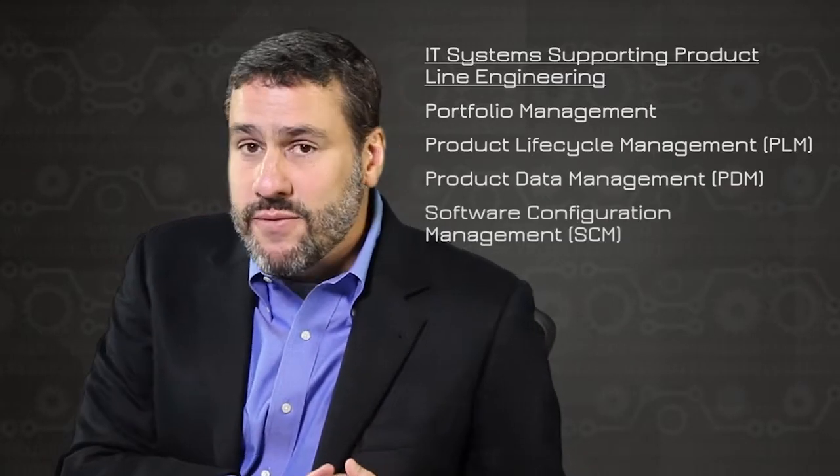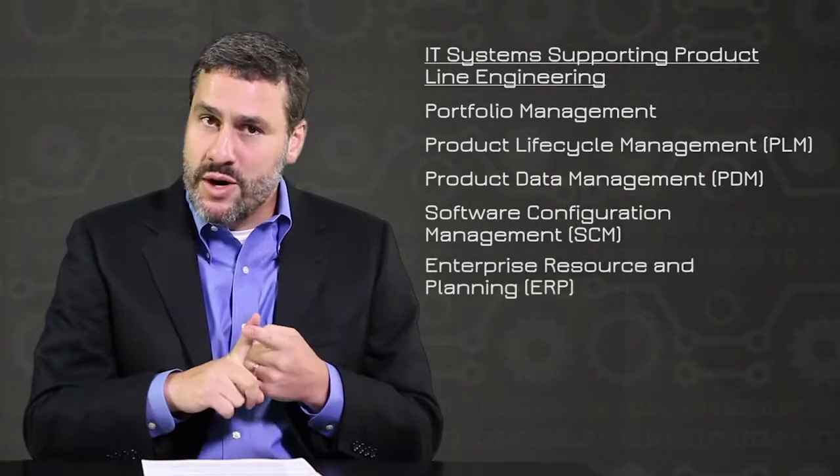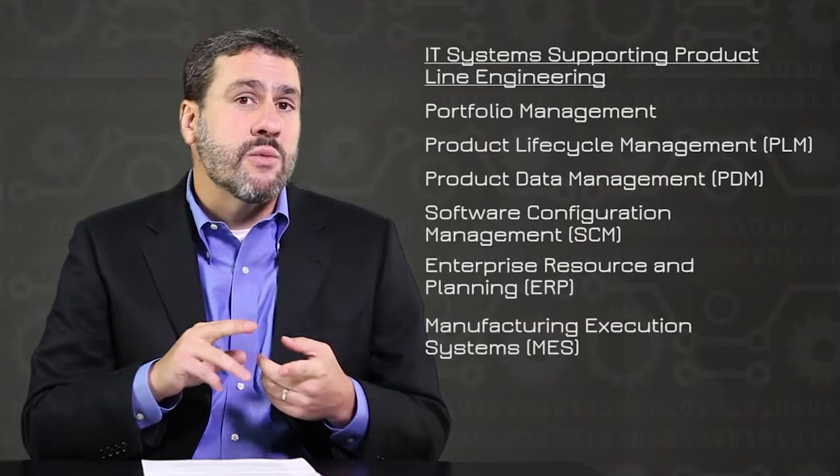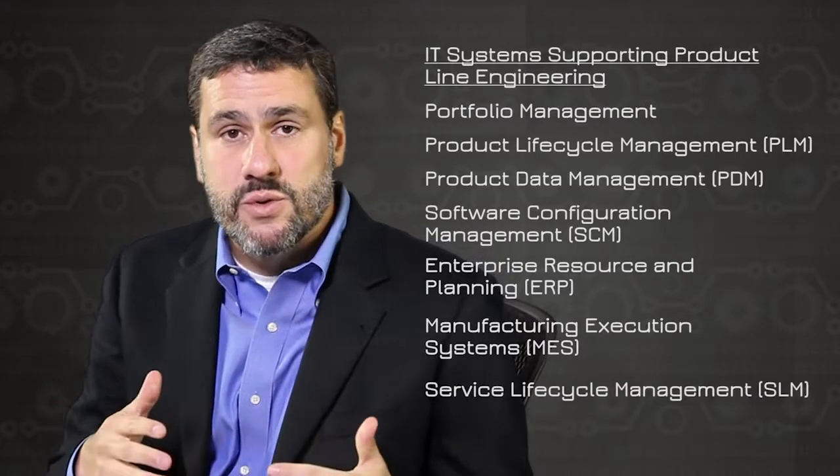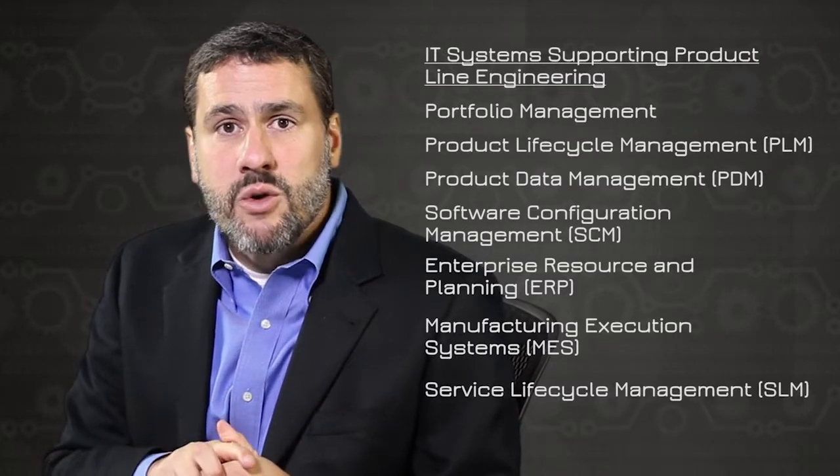If you look at most manufacturers today, different technologies are a huge enabler in how they conduct their processes. But in product line engineering, there are some specific challenges. If you look at portfolio management, they typically use portfolio management systems to analyze opportunities for investments and ongoing projects. Engineering and design use product lifecycle management, product data management, software configuration management, and more. Manufacturing uses enterprise resource planning and manufacturing execution systems to understand inventory and what's happening on the shop floor. And service and maintenance uses service lifecycle management tools to track where calls are being made and where technicians are going.